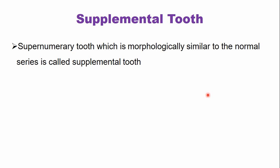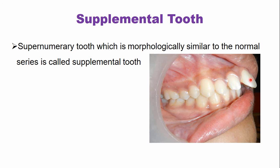There is a term called supplemental tooth. Mesiodans and para- and distomolars are not morphologically similar to the normal teeth, but the supplemental tooth is a supernumerary tooth which is morphologically similar to the normal series — that is why they are known as supplemental teeth. In this clinical picture showing the lateral aspect of the dental arch, we can see the maxillary central incisor, lateral incisor, and canine. The additional lateral incisor shown here is the supplemental tooth — it has a similar outline but is slightly smaller in size than the lateral incisor.